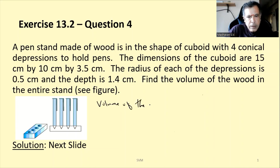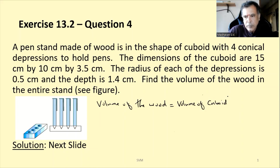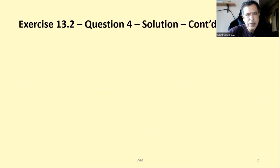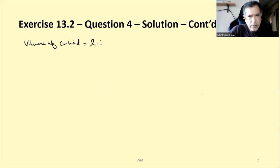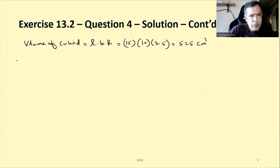To find the volume of the wood, we calculate: volume of cuboid minus four times the volume of cone. Volume of cuboid = length × breadth × height = 15 × 10 × 3.5, which gives us 525 cubic centimeters.